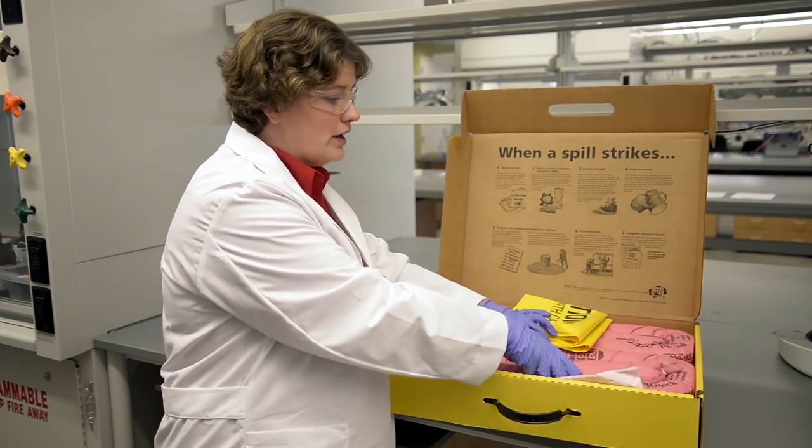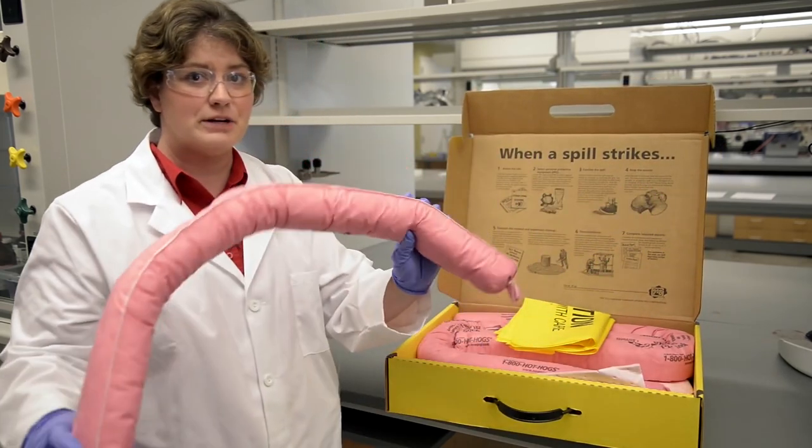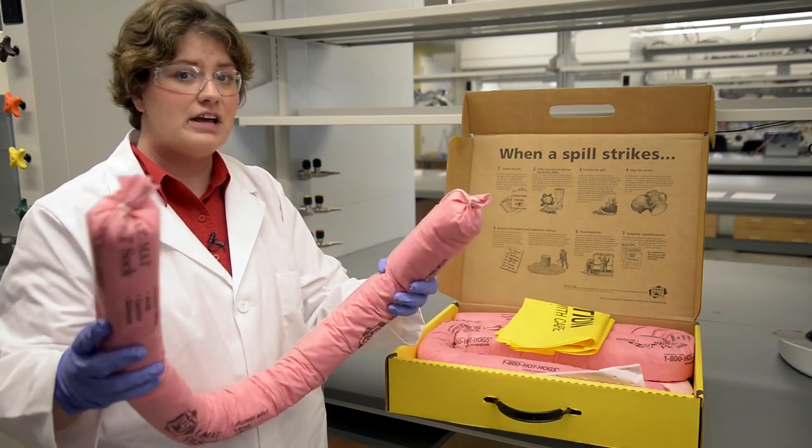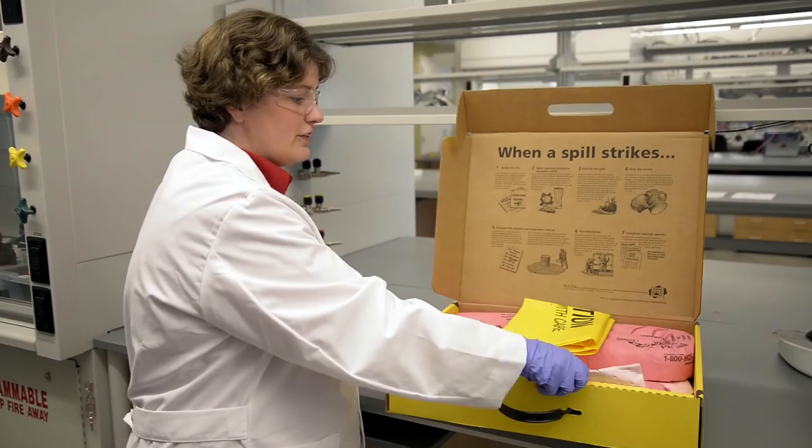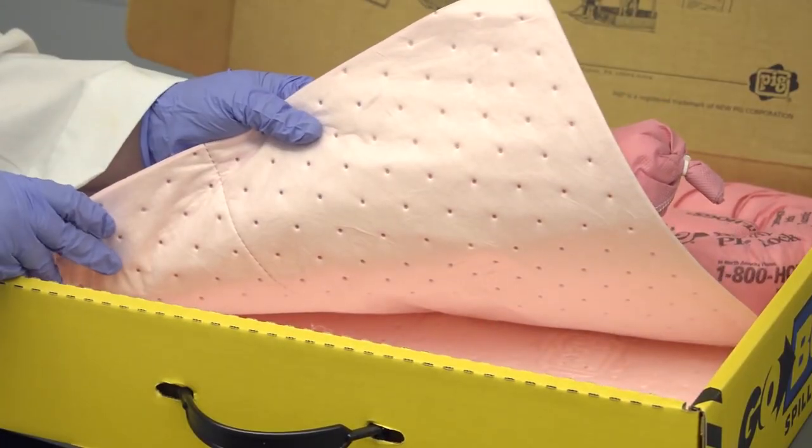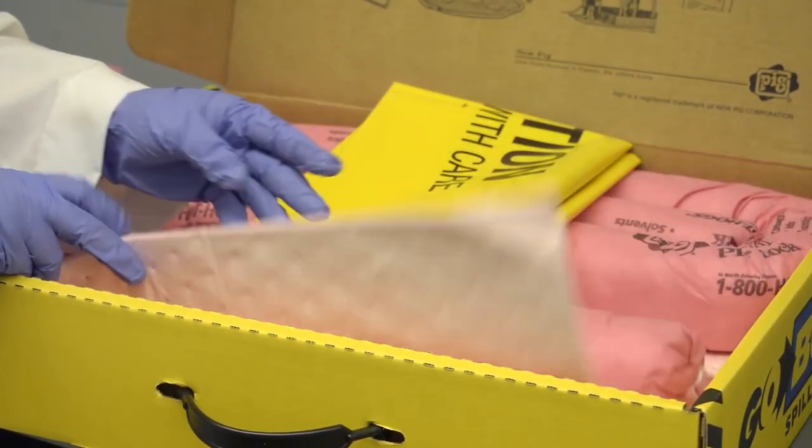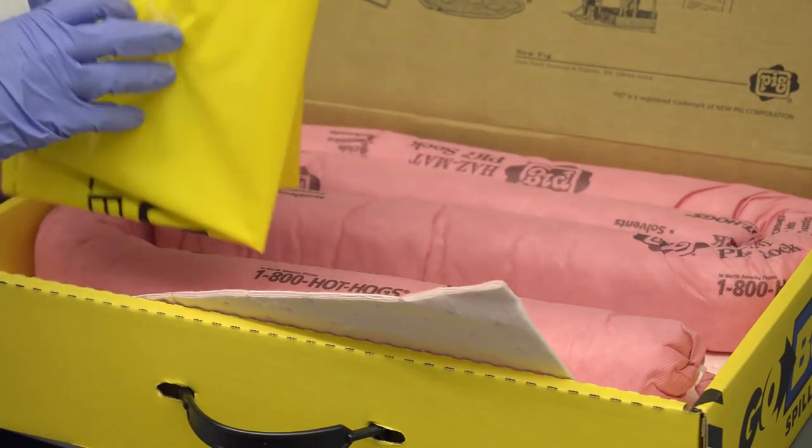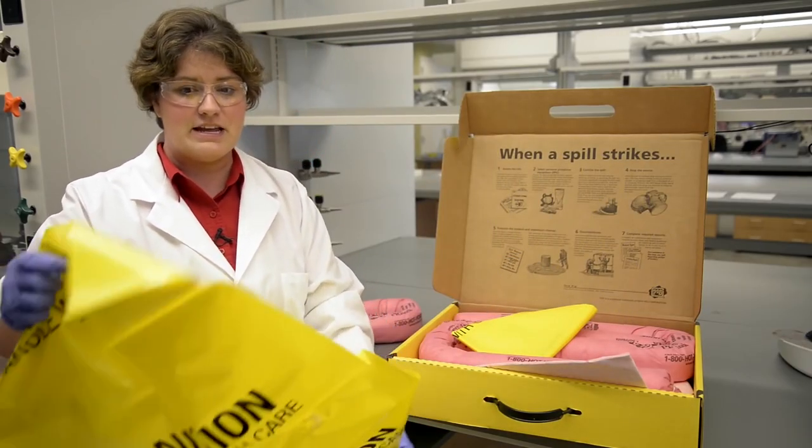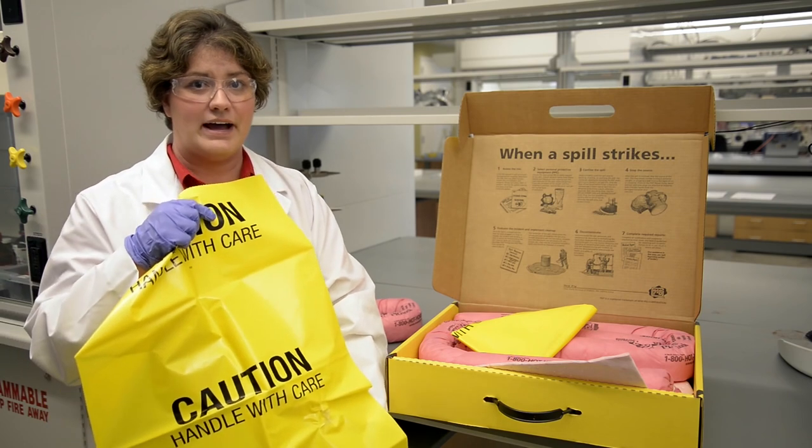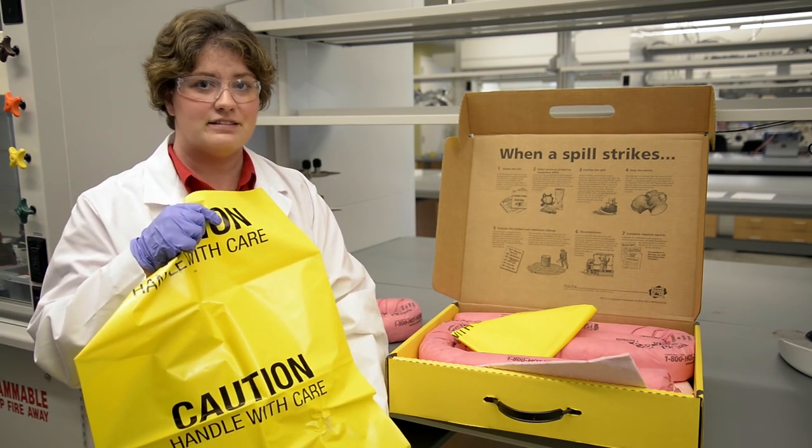When cleaning up a spill, you want to first create a barrier around the spill with an absorbent material. You can also use kitty litter. You want to then cover over the spill with more absorbent material to soak up the spill. Be sure to wipe up all of the spilled material and dispose of the spilled material and any contaminated PPE into a solid hazard waste bag and then call environmental health and safety for pickup.